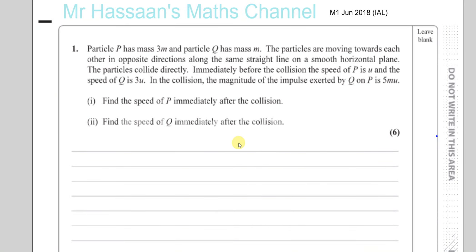I've been asked to do question number one from M1 June 2018, the IAL paper mechanics. This question is about momentum and impulse. Particle P has a mass 3m and particle Q has a mass m, and the particles are moving towards each other in opposite directions on the same straight line on a smooth horizontal plane.